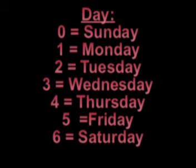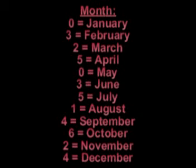And here are the days: 0 Sunday, 1 Monday, 2 Tuesday, 3 Wednesday, 4 Thursday, 5 Friday, 6 Saturday. And here are the months: 0 January, 3 February, 2 March, 5 April, 0 May, 3 June, 5 July, 1 August, 4 September, 6 October, 2 November, and 4 December.